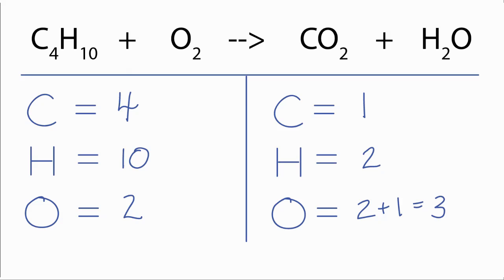So let's balance the carbons and the hydrogens, leaving the oxygens to last. I'll put a four in front of the carbon dioxide, so four times one gives me four carbons. For the hydrogen, I need ten, so I'll put five here. Five times two gives me ten hydrogens.